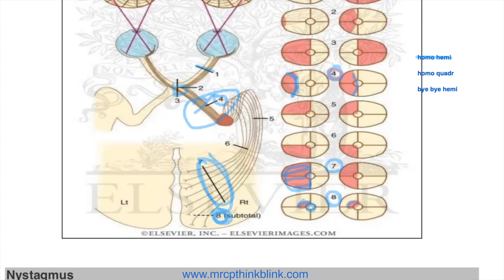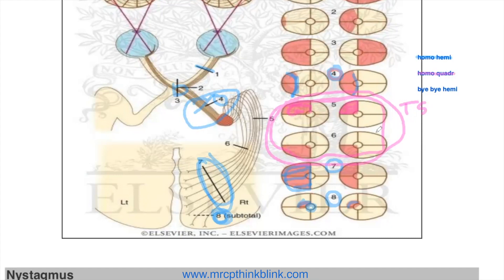Now let's look at homonymous quadrantanopia. This involves lesions five and six. If the lesion is in the temporal lobe — in the temporal radiation fibers — the superior quadrant is involved. So it is superior homonymous quadrantanopia: same side, one fourth of the globe is affected when the lesion is in the temporal lobe.